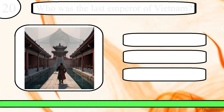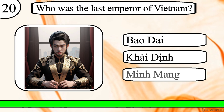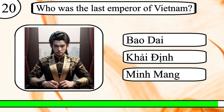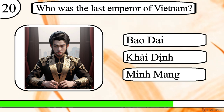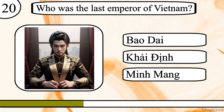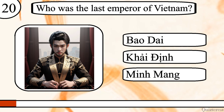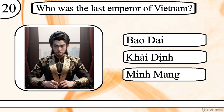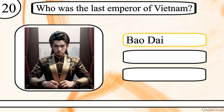Question 20. Who was the last emperor of Vietnam? Bao Dai, Kai Jin or Minh Mang? The correct answer is Bao Dai.